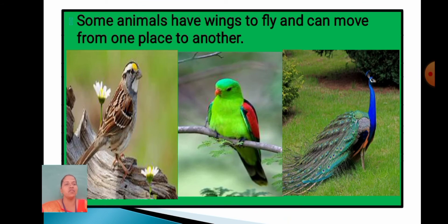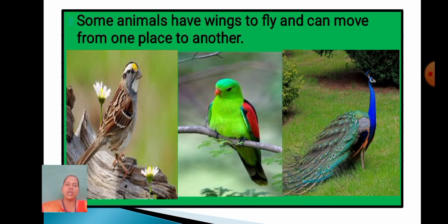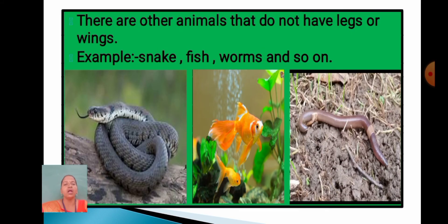Some animals have wings to fly and can move from one place to another, and they can also use their legs, because along with two wings they have two legs also. There are other animals that do not have legs or wings. For example, snake, fish, worms, and so on.